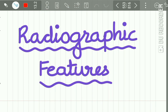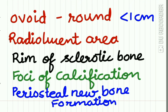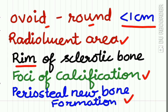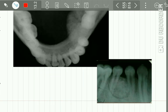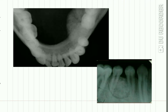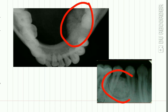Radiographic features: it appears as an ovoid to round radiolucent area less than one centimeter in diameter, with a rim of sclerotic bone having foci of calcification and new periosteal bone formation. Here you can see a radiographic picture of osteoid osteoma.